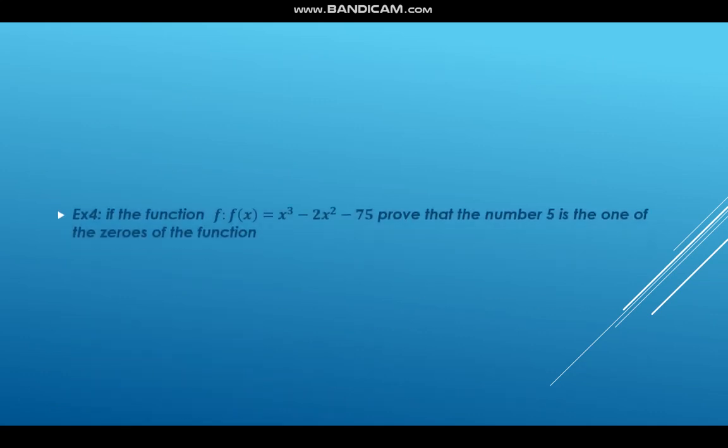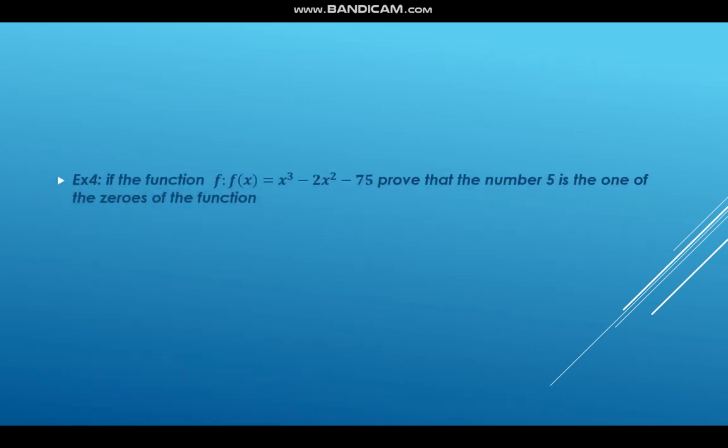The last question: given f(x) = x³ - 2x² - 75, prove that the number 5 is one of the zeros of the function. That means when we substitute x = 5, the function equals zero. We calculate f(5): 5³ - 2 × 5²...